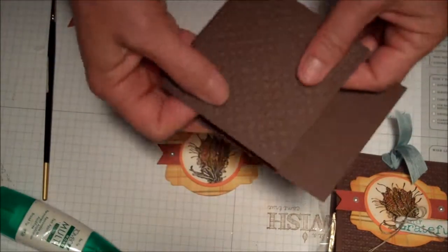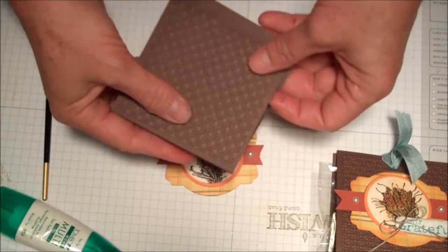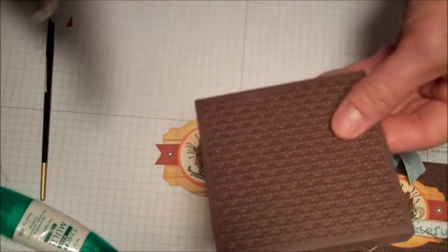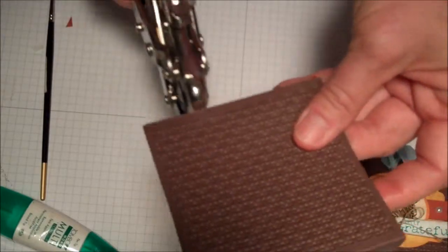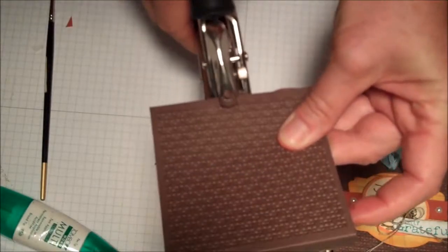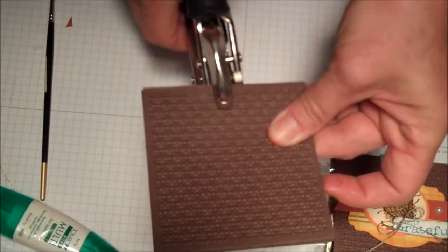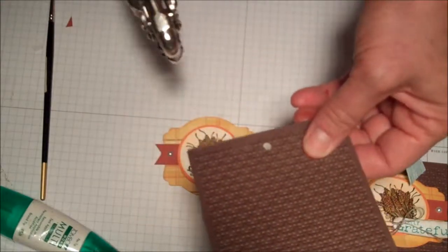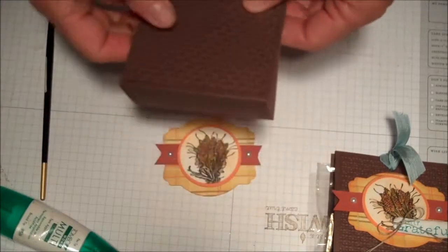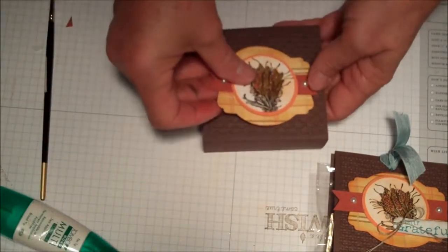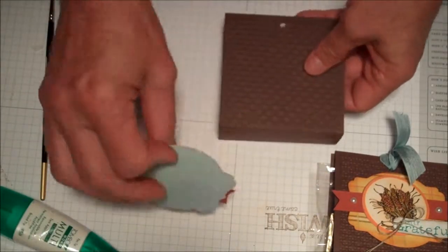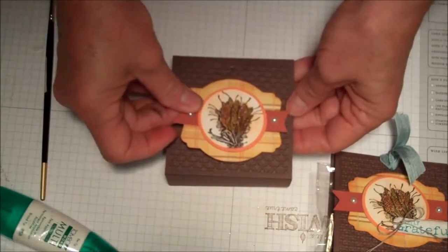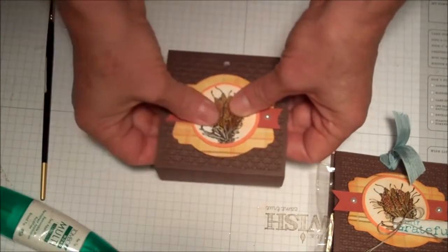We're back here on this piece, this is the base. We used to sell these a couple years ago, Crop-a-Dile, but just grab anything that'll punch a pretty big hole. You want to center it up, that's where your ribbon is going to go. Then I'm going to put this on with dimensionals and it goes right in the center.